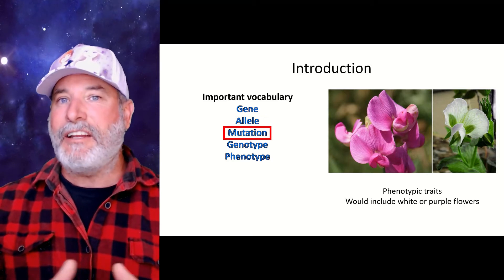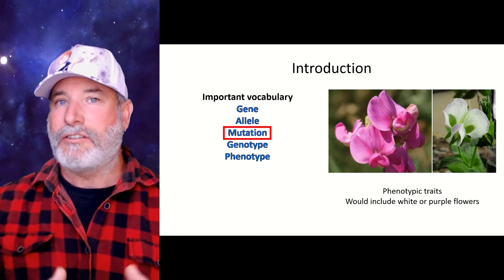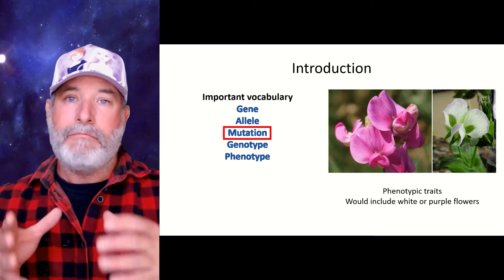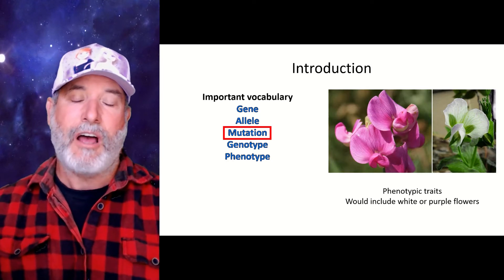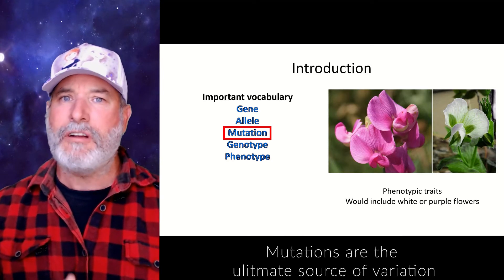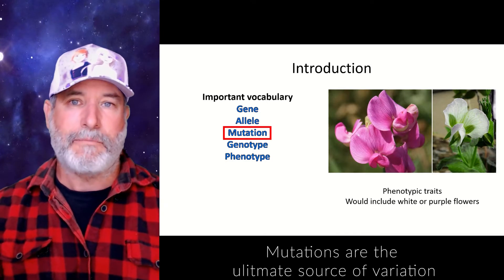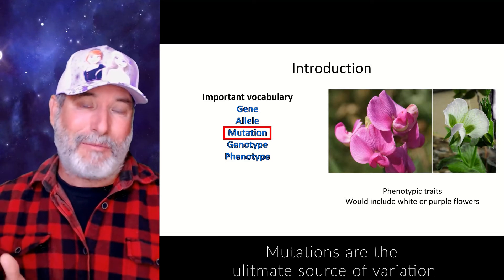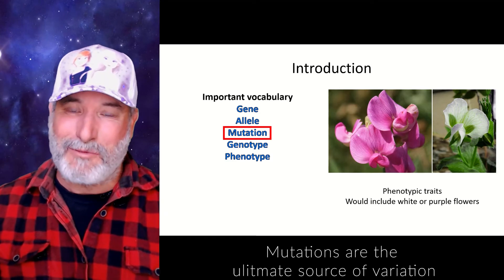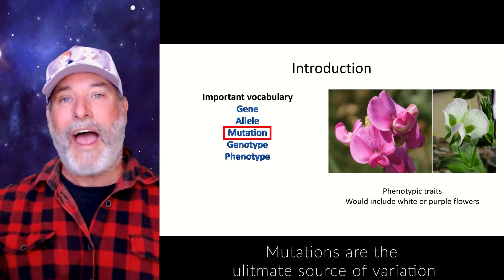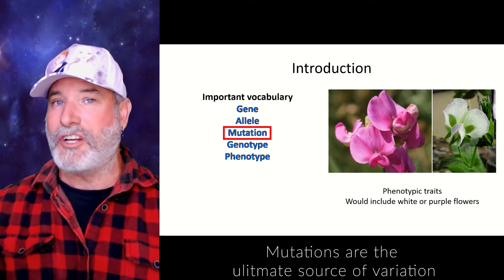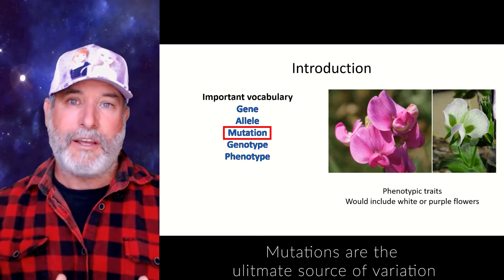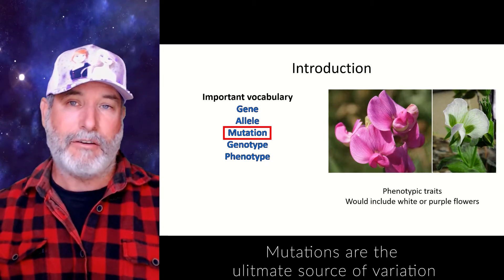A mutation is any change to your DNA — specifically the sequence of DNA. Mutations are the ultimate source of variation by creating new alleles. You and I have the same genes, but what we have is a different combination of those genes — something we'll talk about when we get into the nuts and bolts of meiosis.